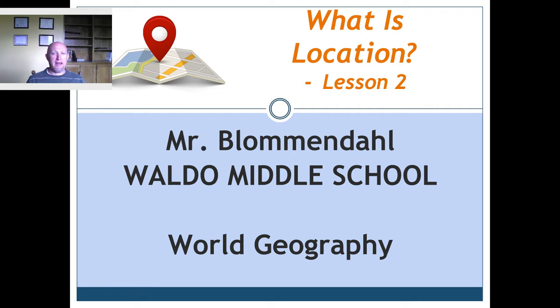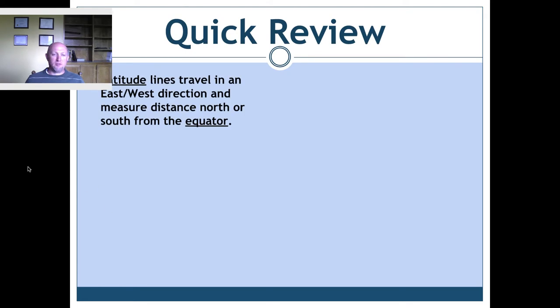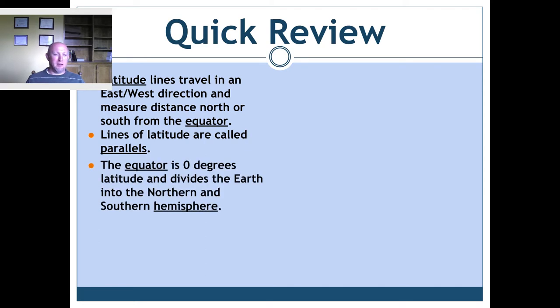You should already have the essential question written across the top of your Cornell notes. We're going to do a quick review of lesson one — kind of like the drive-by lesson one review — where we talked about latitude. Latitude lines travel in an east-west direction and measure the distance north or south from the equator. The equator is an imaginary line that is zero degrees latitude, and we call lines of latitude parallels because they are always the same distance apart and they never touch.